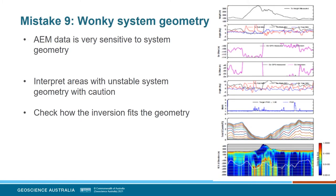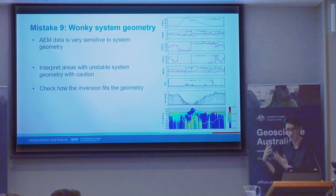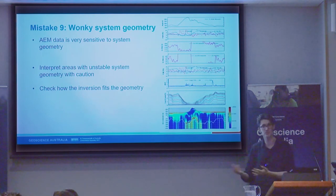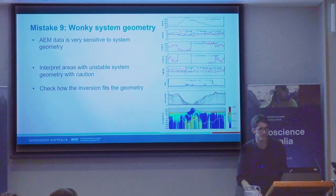AEM data is very sensitive to system geometry, and wonky system geometry can create features that aren't geological and shouldn't be interpreted. We see this a lot in areas with significant topography, where to maintain a safe flight height the aircraft will rise and dip, swinging the frame and creating quite a big change in height. While we can model this, we often know the position of the receiver only imprecisely, and this wonky geometry can propagate through to inversion errors. I would not trust or invert this — there are probably 3D effects there as well.